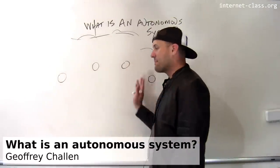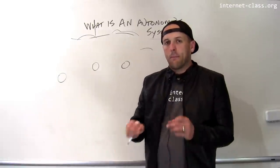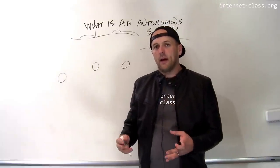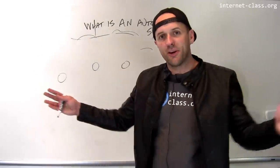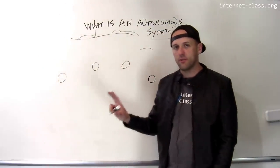We think about routing on the internet as happening between computers that are connected to the internet, and that's true. But routing is also done in a hierarchical way that reflects the structure of the internet itself, because the internet isn't just one big computer network. The internet is a network of computer networks.